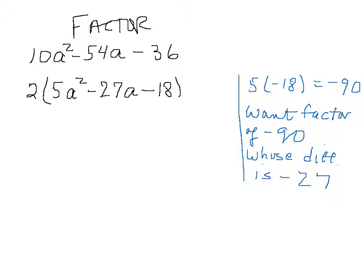The reason that it's a difference now is because this is a minus. And so I've got to have a plus and a minus. Let's think about this. What are two numbers whose product is minus 90 and whose difference is minus 27? You've got to think about that for a while. Maybe write out all the factors of minus 90. But you should come up with 3 and minus 30. They multiply to give you minus 90 and their difference is minus 27.